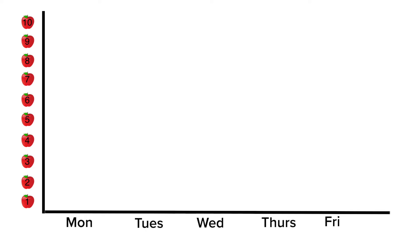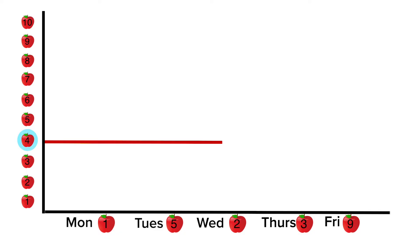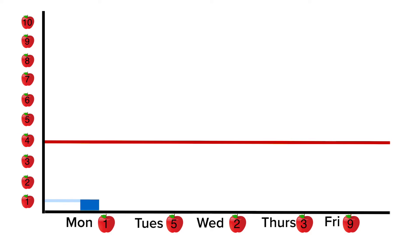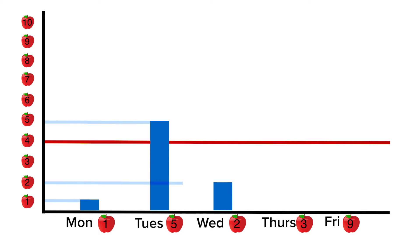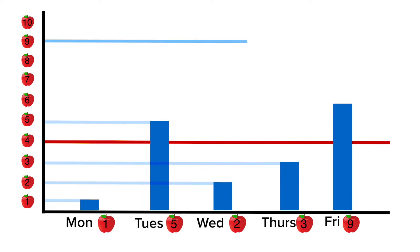Here's another way to look at average. Here's a number bar, and let's take each day and put the quantity of apples on the number bar: one, five, two, three, nine. Now let's draw a horizontal line on the bar where it says four. We're going to look at each number on the bar and see how far above or below it is from four. The number one is three below the line. The number five is one above the line. The number two is two below the line. The number three is one below the line. The number nine is five above the line.